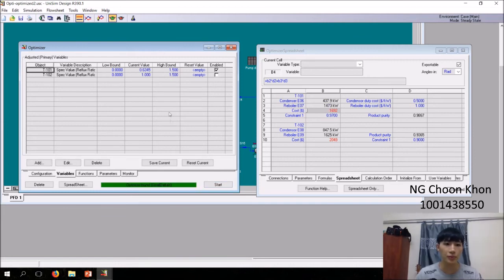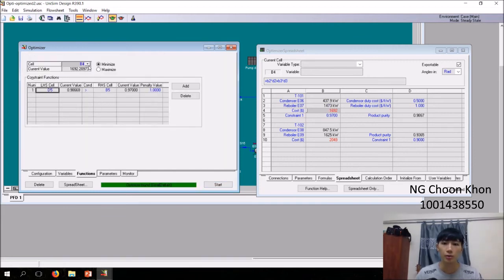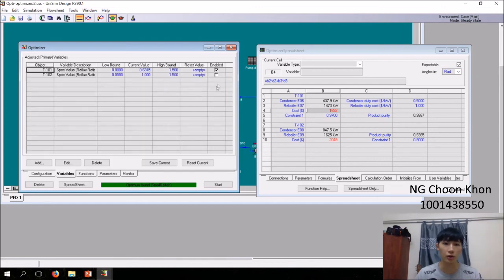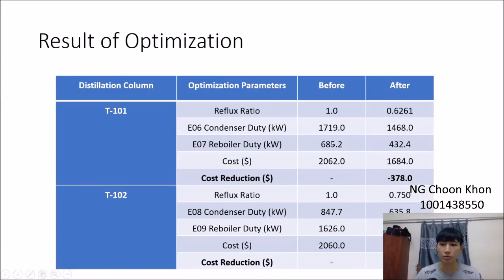We enable this and start. We get a value. For the second column, we set cost v1 and the cells d9 and d10 more than the constraint. Put the variable and run. We get this value. As you can see from the summary, the cost reduction is 378 dollars for one column and 329 dollars for another. This is more significant than the split optimization.